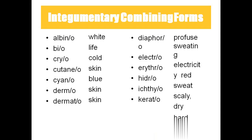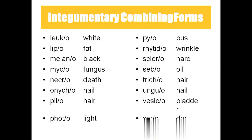Itio means dry or scaly — our skin can become dry and scaly. Kerato means hard and horny. Leuco means white. Lipo means fat. Melano means black — so melanocyte means black pigment cell. Myko means fungus; in most medicines they will also use myko, so myko means fungus.